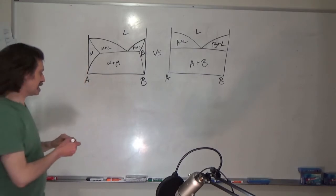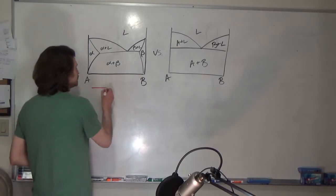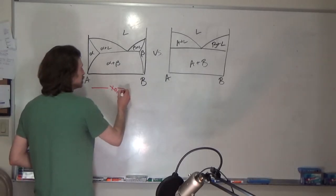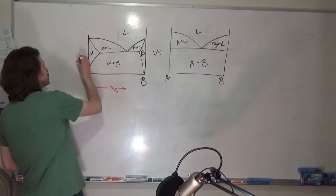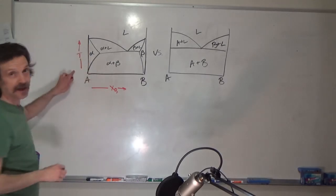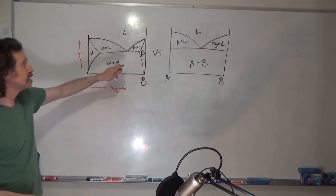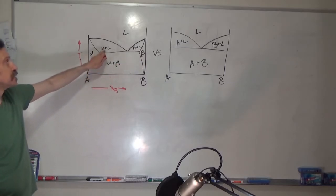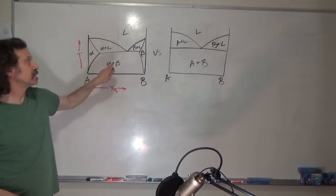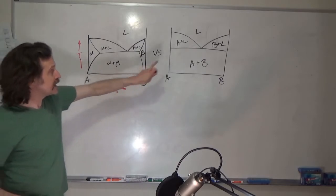You've got constituent A and constituent B, temperature is the y-axis, you've got solid solution alpha, beta, and then you have your two-phase regions: alpha plus liquid, beta plus liquid, alpha plus beta. In contrast,